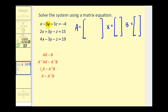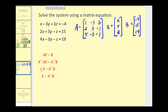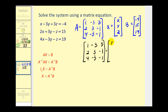The coefficient matrix will be: 1, negative 3, 3 in the first row; 2, 3, negative 1 in the second row; and 4, negative 3, negative 1 in the third row. The variable matrix will be X, Y, Z. And the constant matrix will be negative 4, 15, 19. So the matrix equation would be the coefficient matrix times the variable matrix must equal the constant matrix. Our goal is to solve this equation for the variable matrix, so we're going to multiply both sides by the inverse of matrix A.